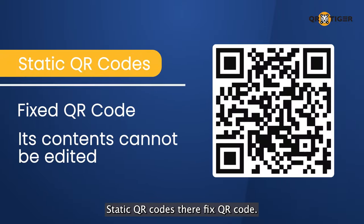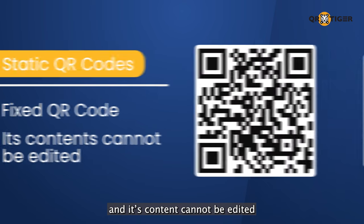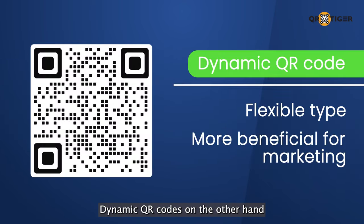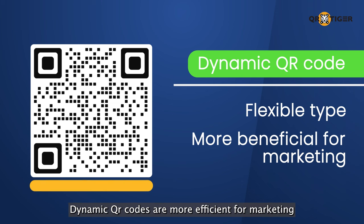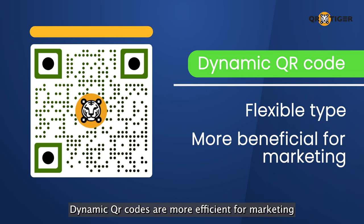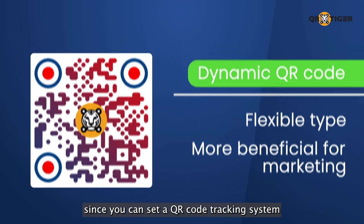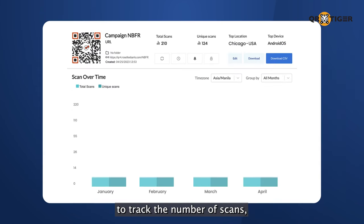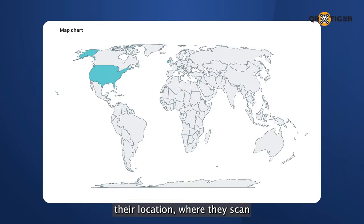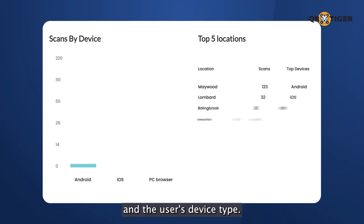Static QR codes are fixed QR codes, and their contents cannot be edited. Dynamic QR codes, on the other hand, are the flexible type. Dynamic QR codes are more beneficial for marketing, since you can set up a QR code tracking system to track the number of scans, when the user scans, the location where they scan, and the user's device type.